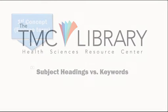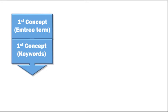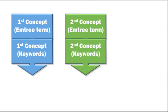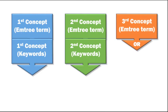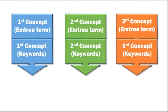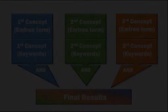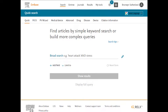Searching Embase in this way can be thought of as a building block approach. We start with the mTree term search and add that to our keyword search with the Boolean operator OR. Adding those searches together results in the first building block of our literature review. The next building blocks consist of mTree terms and keyword searches for all the remaining concepts. Once we have all the blocks in place, we combine them with the Boolean operator AND. Let's go ahead and search mTree for our first concept of hydroxychloroquine.